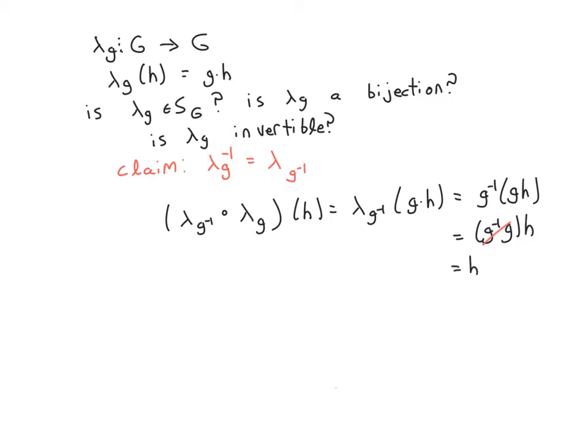So that's why I wanted to do this version of the proof, because it actually highlights some of the aspects of group theory. You actually see why the inverse axiom is so important to the group. The inverse axiom is the reason why this left multiplication operation actually gives you a permutation.